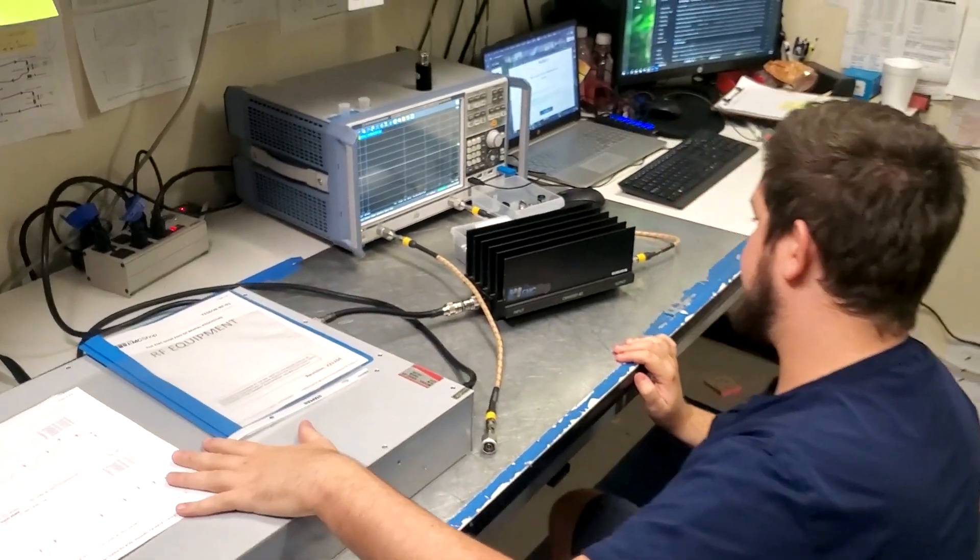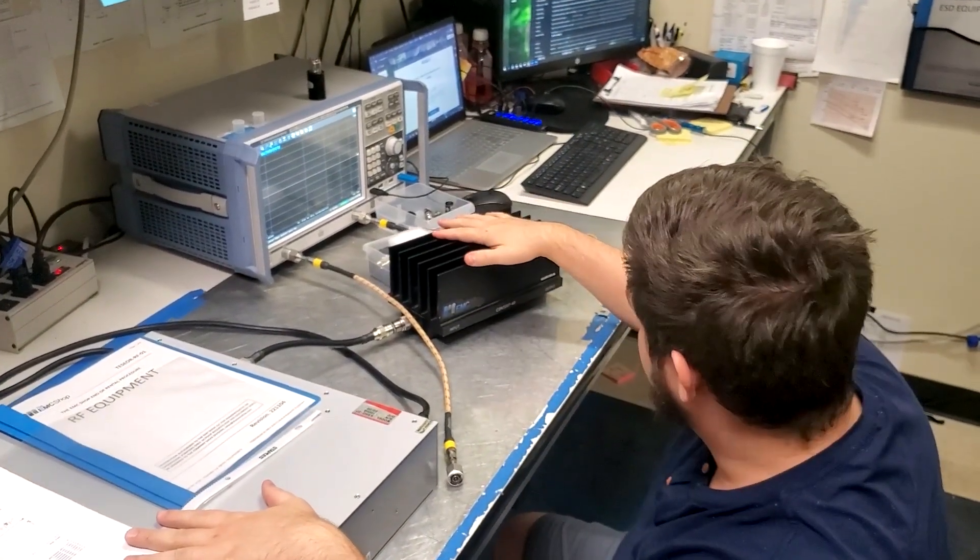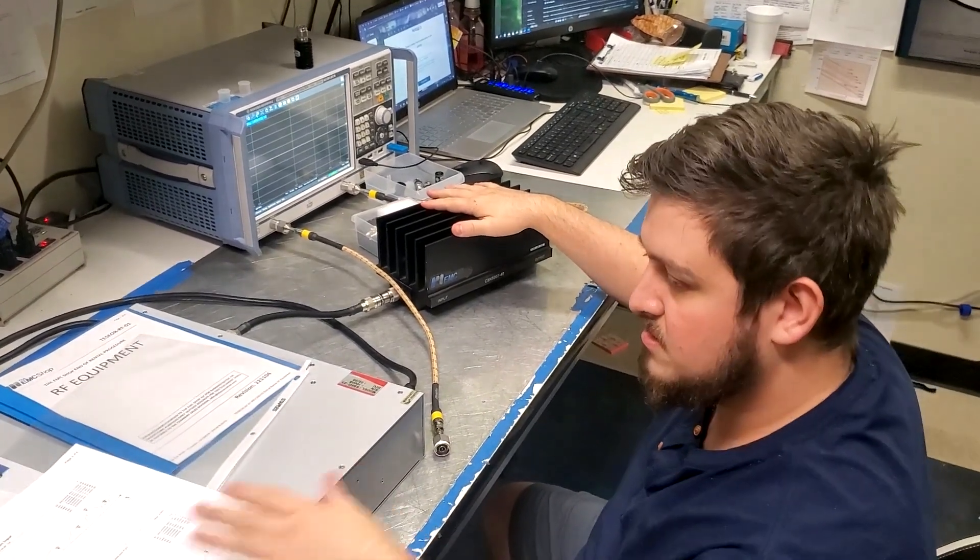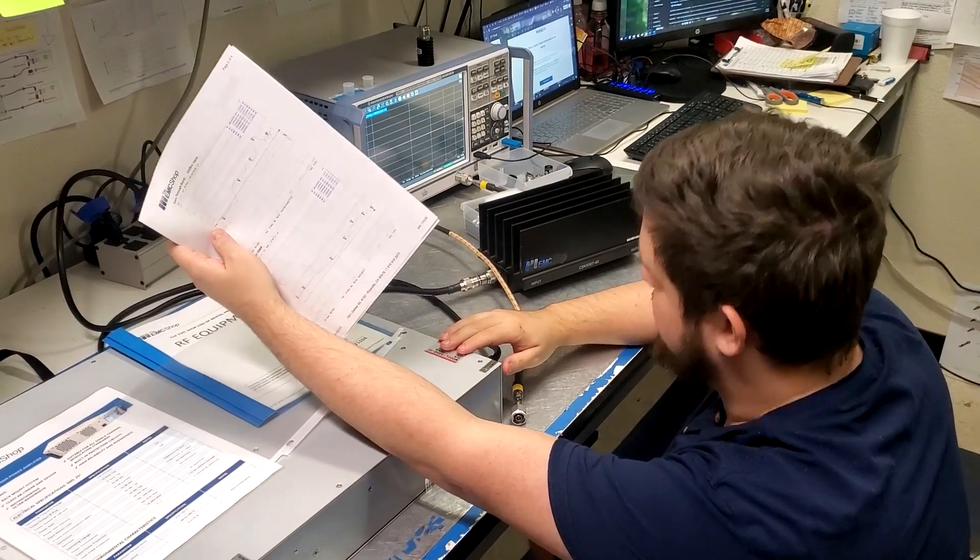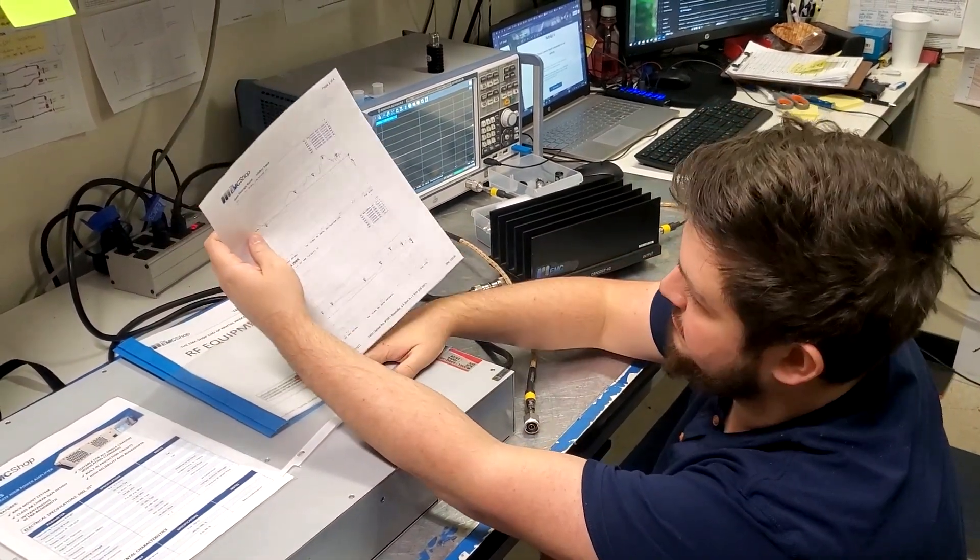So I have the amplifier powered on. I have a 40 dB attenuator in line. A 40 dB attenuator ensures that if I have negative 10 dB input going into this amplifier...